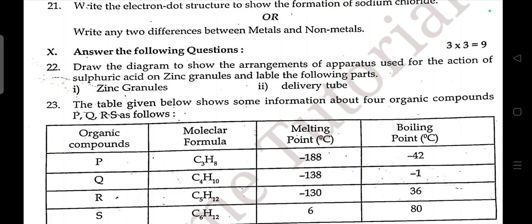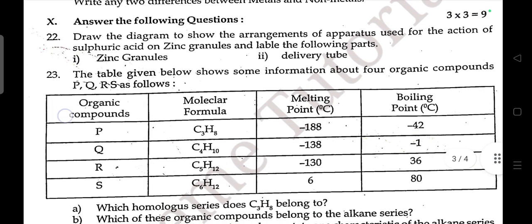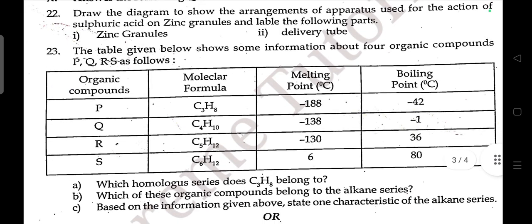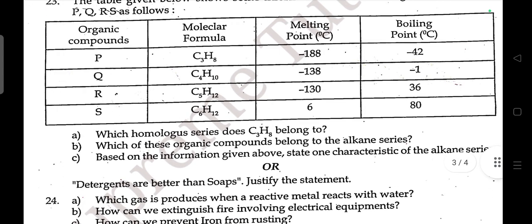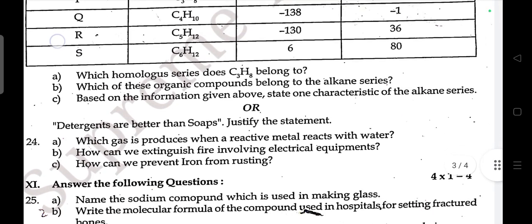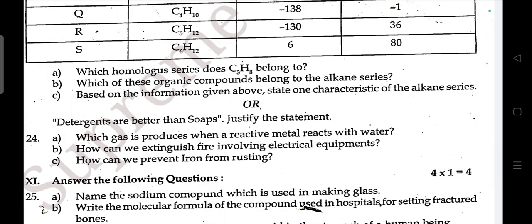Label the following parts: zinc granules and delivery tube. The table shows information about four organic compounds P, Q, R, S — which homologous series does C3H8 belong to? Which compound belongs to the alkane series? State one characteristic of the alkane series.